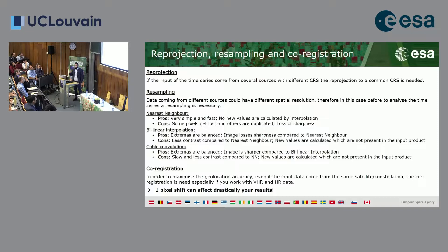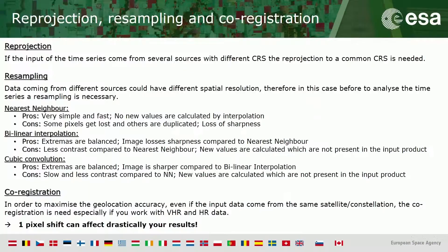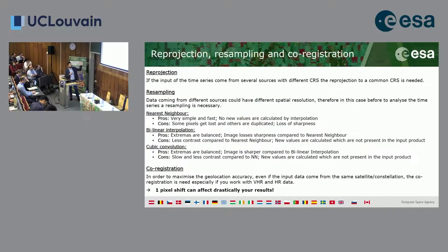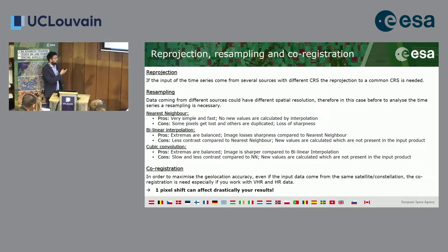Don't forget the other preprocessing steps: reprojection, resampling, and co-registration. Reprojection is necessary if you have data from different sources with different coordinate reference systems — reproject to a common reference system. For resampling there are several methods: nearest neighbor, bilinear interpolation, and cubic convolution. And co-registration is critical because even a one-pixel shift can drastically affect your time series analysis.